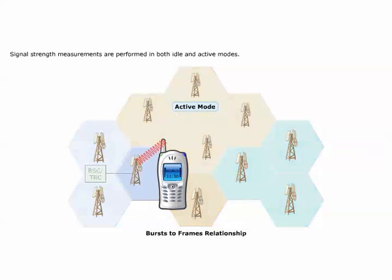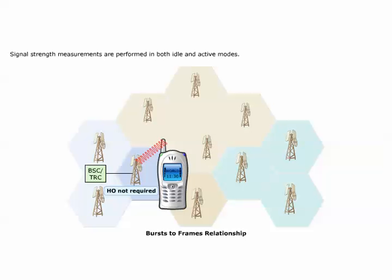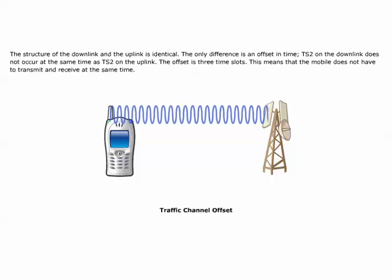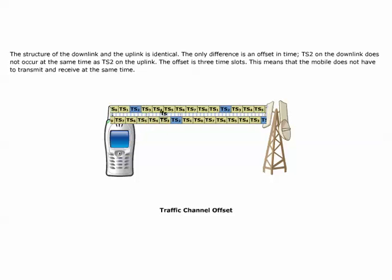Active mode is when the mobile is communicating with the network. Both the mobile station and the serving BTS perform signal strength measurements on the radio link. The mobile continuously reports to the system how strong the received signal strength is from the BTS. These measurements are used by the BSC to make decisions about target cells when handover is required. The structure of the downlink and the uplink is identical; the only difference is an offset in time of three time slots, meaning the mobile does not have to transmit and receive at the same time.